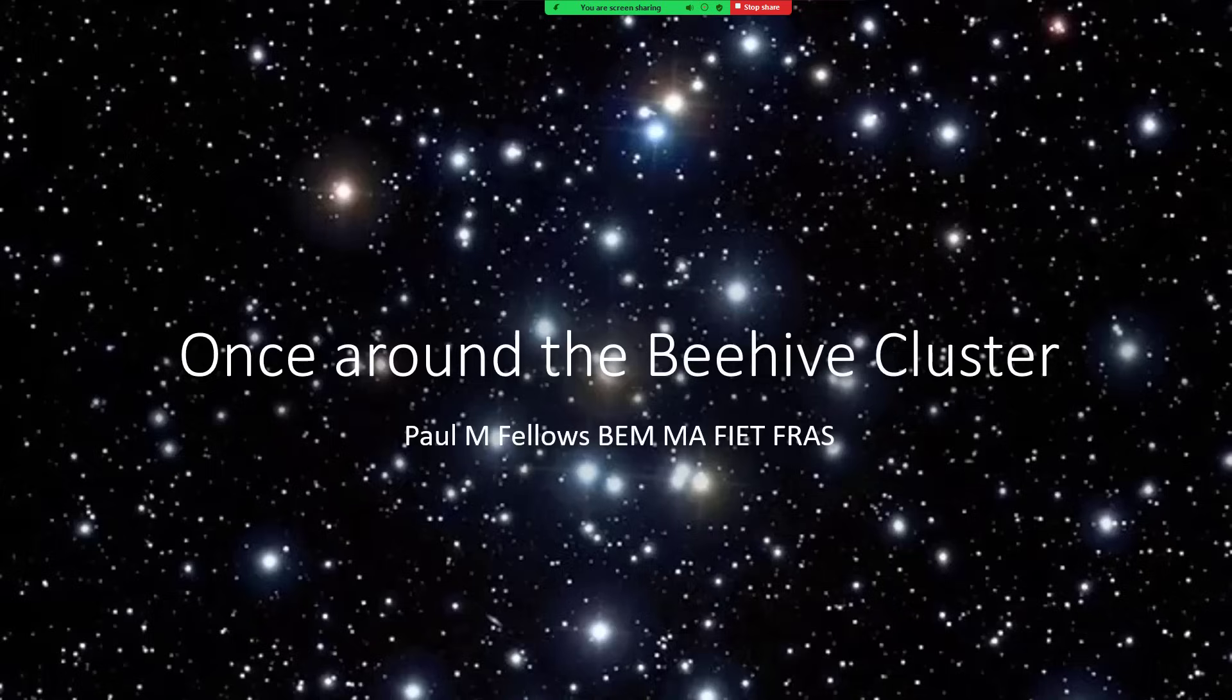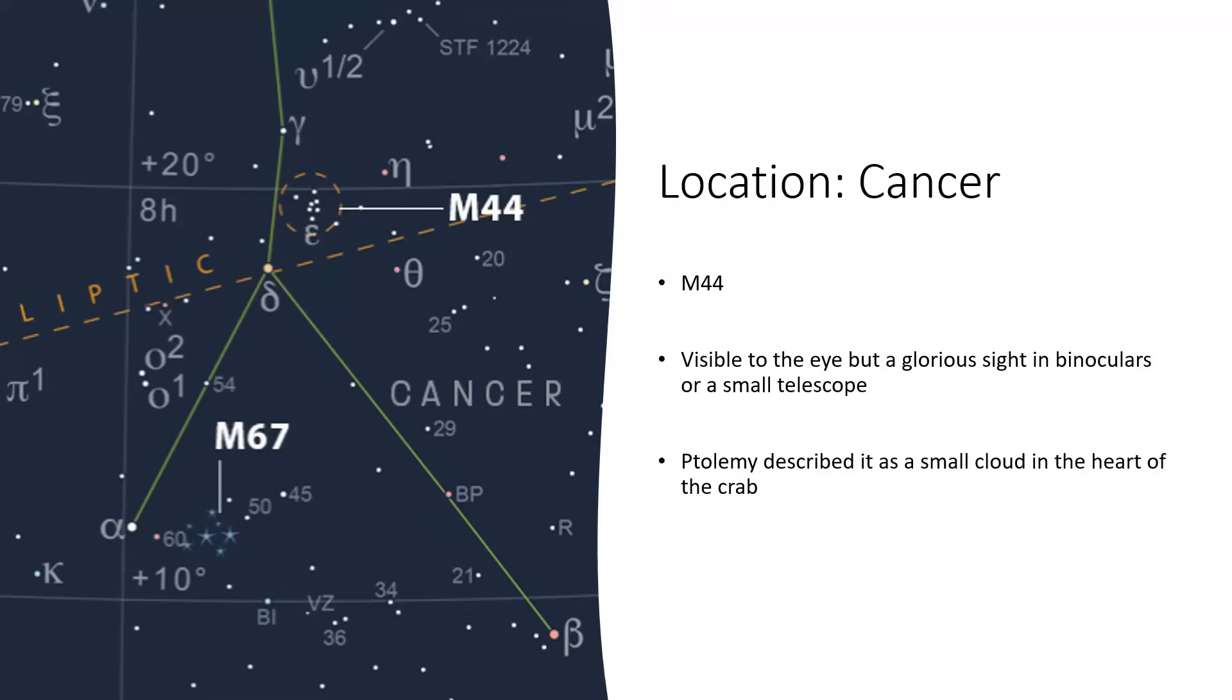Once around the Beehive Cluster, an interesting little open cluster in the rather obscure constellation of Cancer the Crab. I say obscure because it's quite hard to find Cancer - there aren't really any bright stars in it. It's in the gap between Leo and Gemini. But the Beehive Cluster is classified as M44 and it's right in the center.